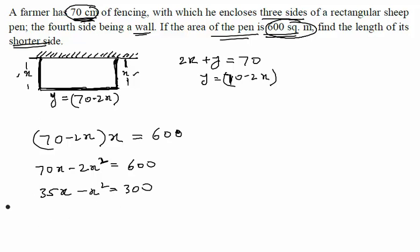Let us bring everything to one side. You will get x square minus 35x plus 300 equal to 0.